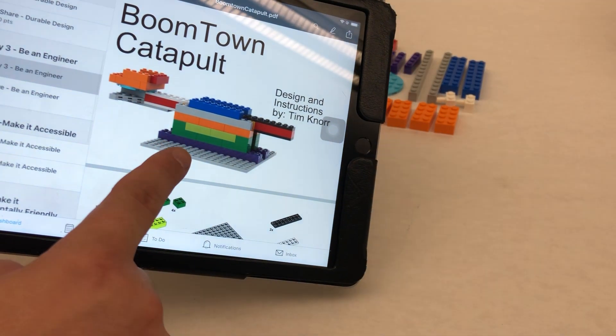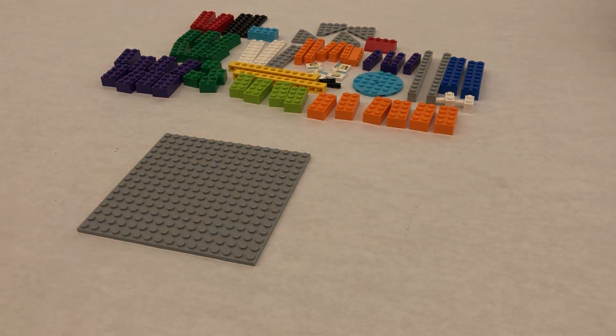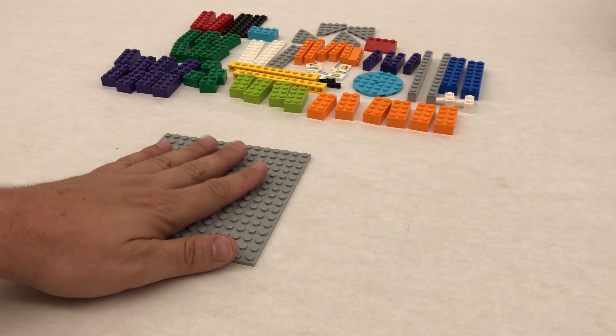All right everybody, we're gonna be following the building instructions for our Boomtown catapult. This is made entirely out of pieces that come in that Boomtown build.